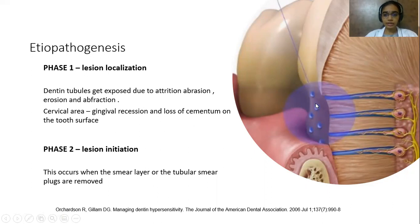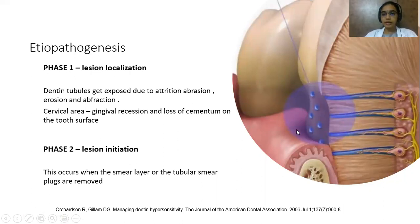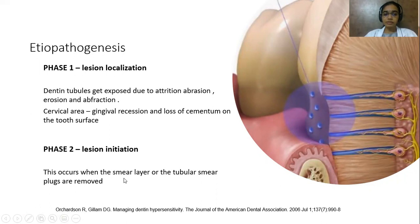In lesion localization, the outer enamel or cementum is removed leading to exposed dentinal tubules. However, not every exposed dentinal tubule is sensitive. For dentinal tubules to become sensitive, lesion initiation needs to take place. This occurs when the smear layer or tubular smear plugs occluding the dentinal tubules get removed.